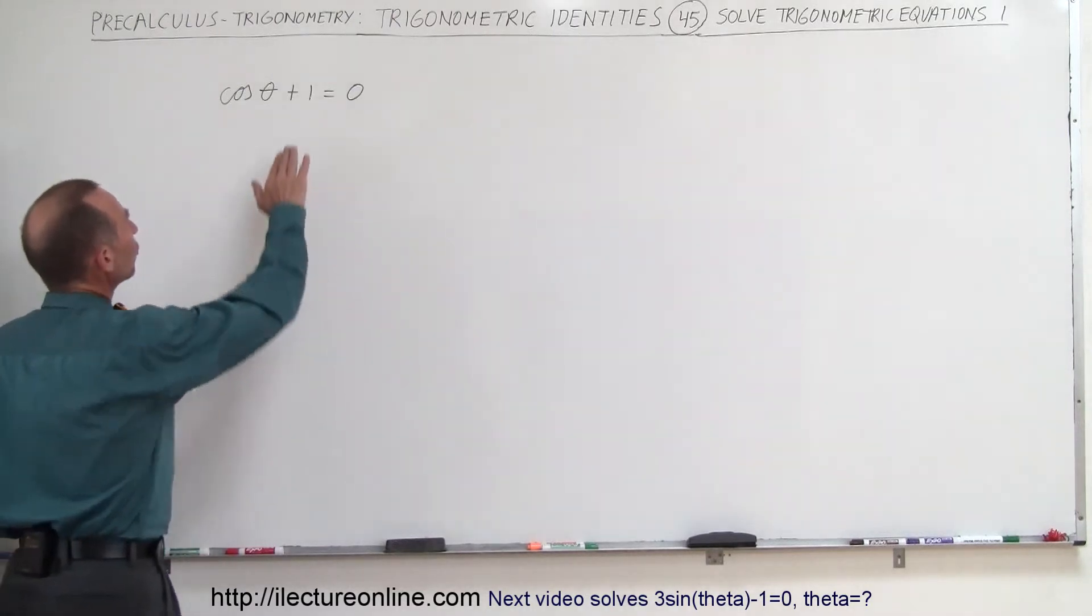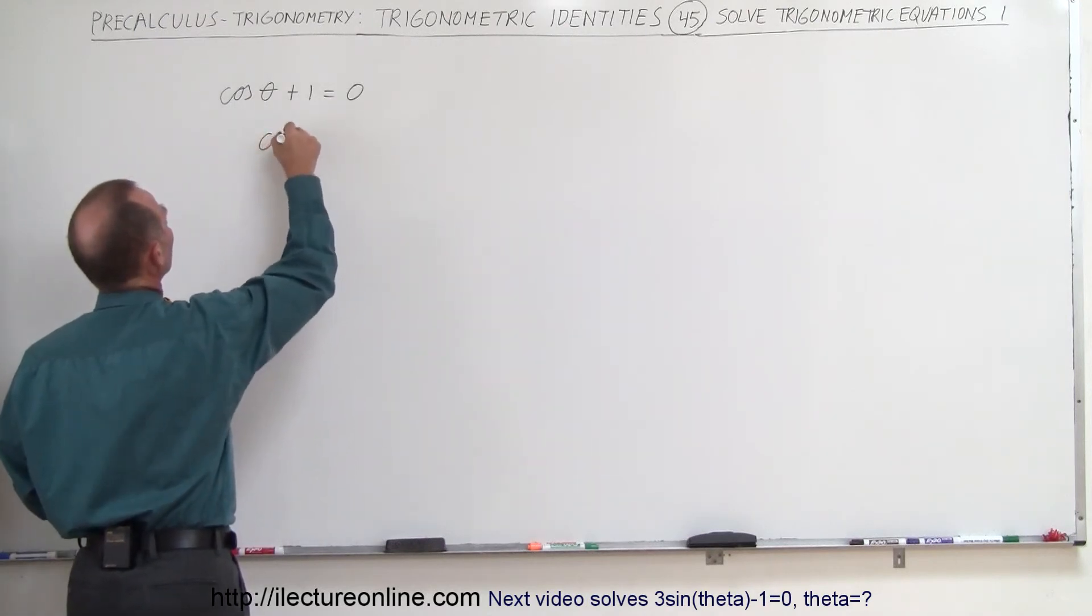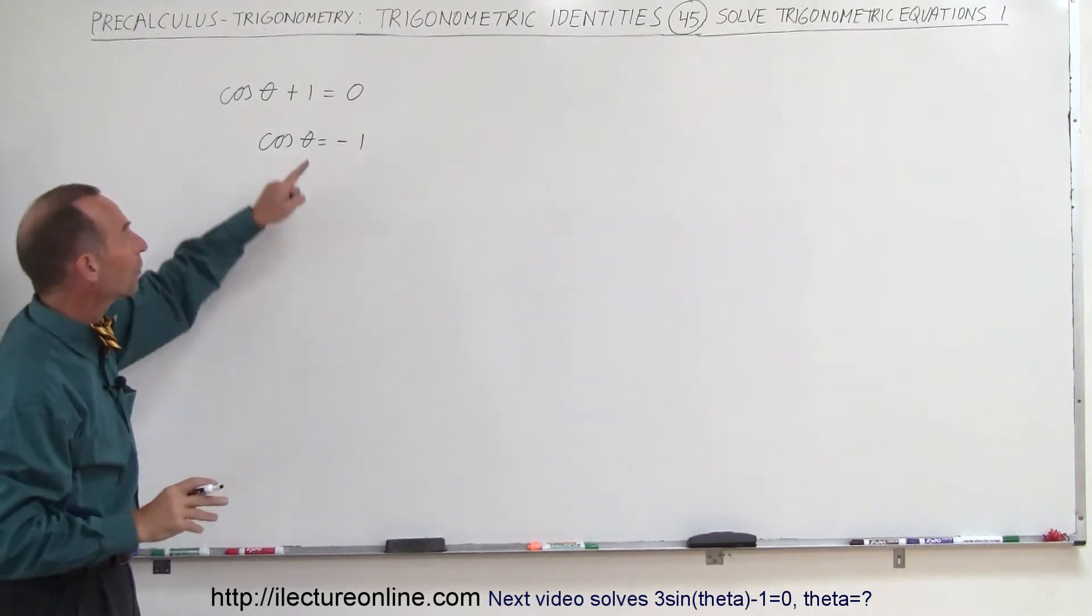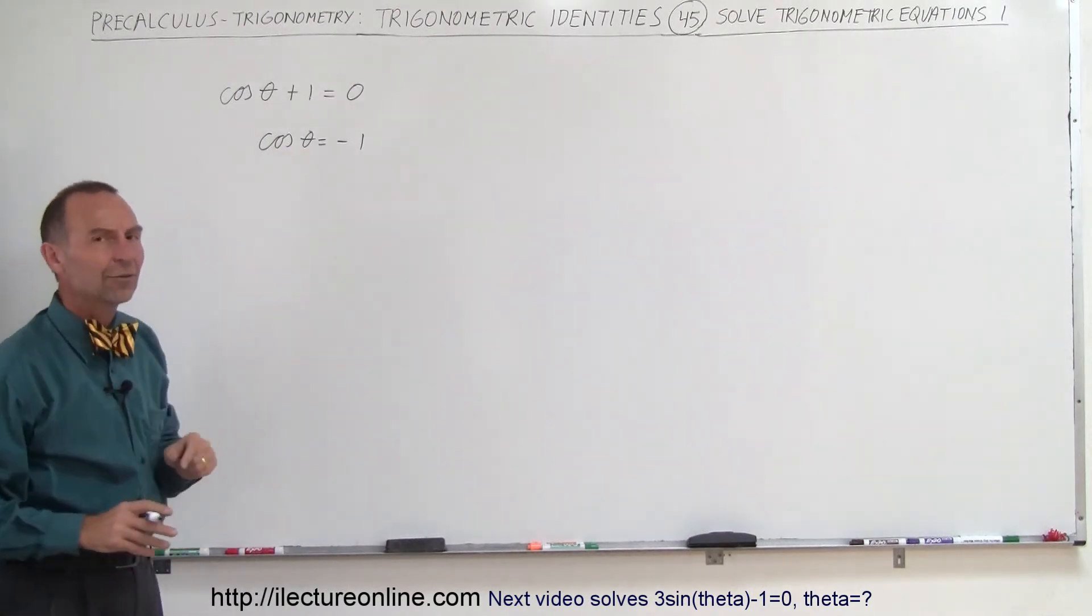Solving this, what I'm going to do is move the 1 to the other side. We can write this as cosine of theta is equal to negative 1. Now we're looking for an angle theta so that when we take the cosine of it, we get negative 1.